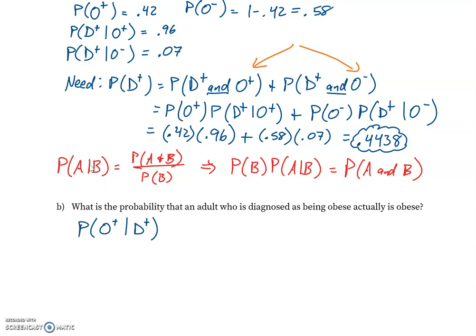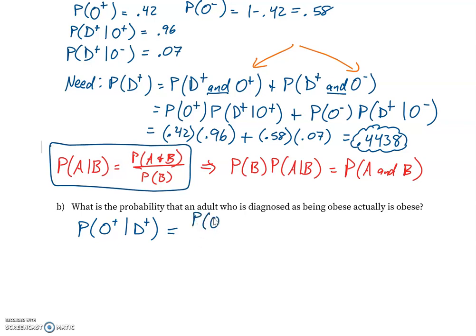This is a conditional probability, so we can use our basic formula. We need the probability that both events happen — being obese and being diagnosed as positive — divided by the probability of the given event, being diagnosed as positive.